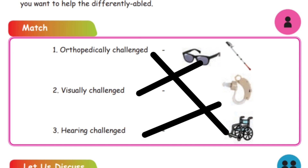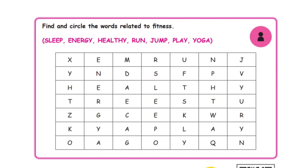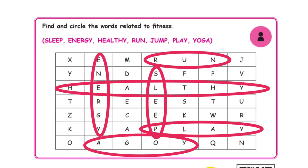First: orthopedically challenged — match with the third picture. Second: visually challenged — match with the first picture. Third: hearing challenged — match with the second picture. Find and circle the words related to fitness: sleep, energy, health, run, jump, play, yoga.